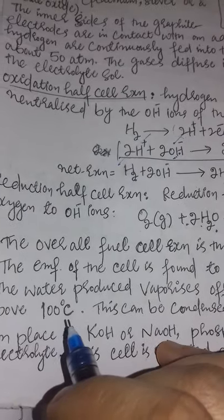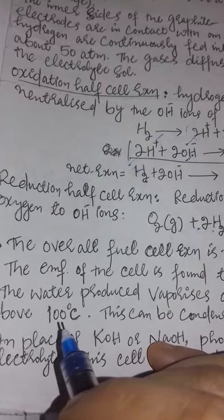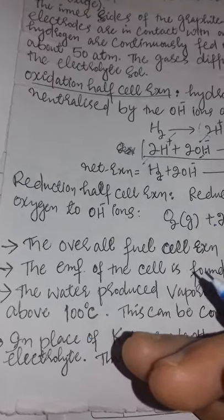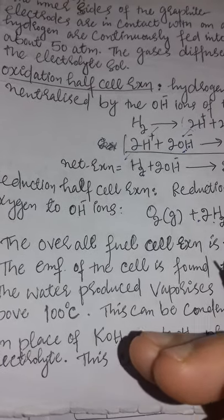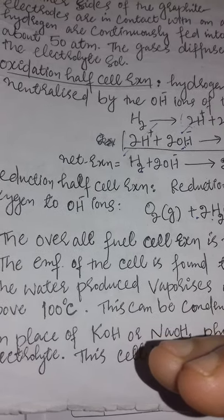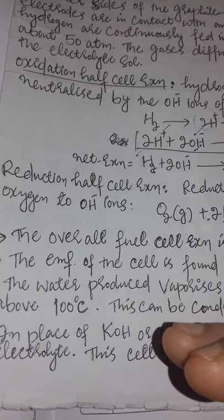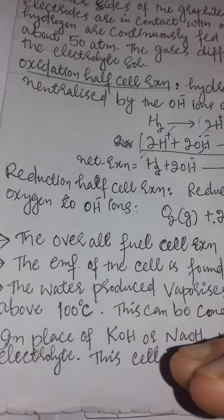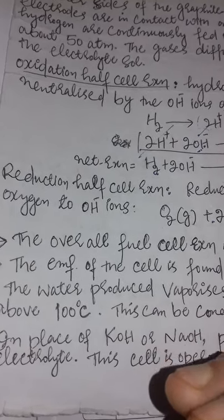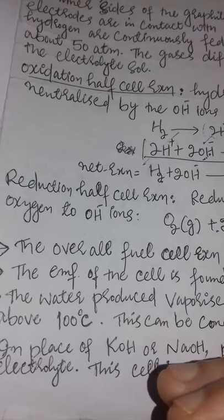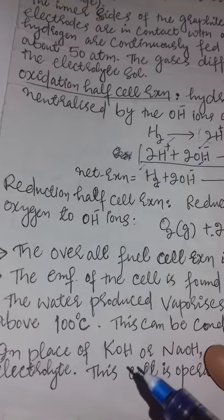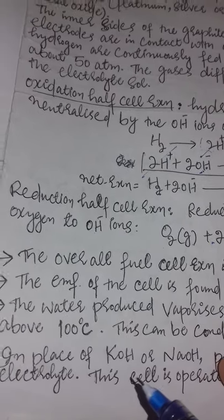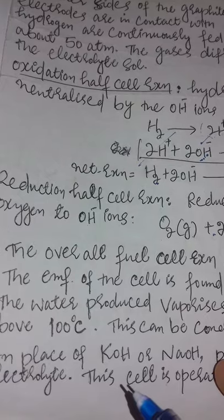Regarding temperature, there are three types of fuel cells based on operating temperature. Low temperature fuel cells operate at less than 100 degrees Celsius. Medium temperature fuel cells operate between 100 and 250 degrees Celsius. High temperature fuel cells operate at greater than 500 degrees Celsius.